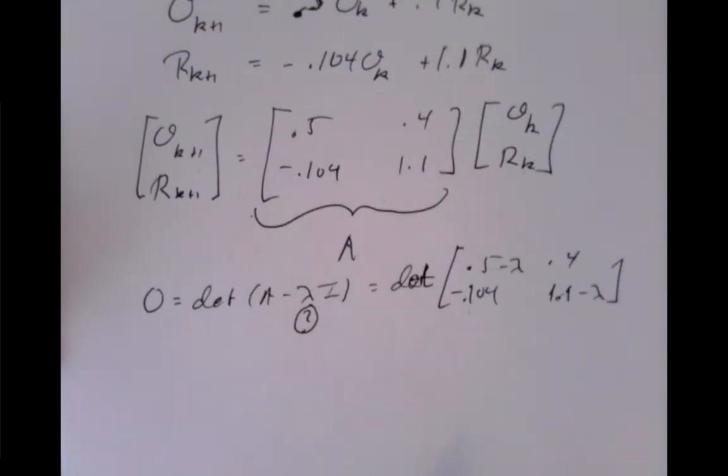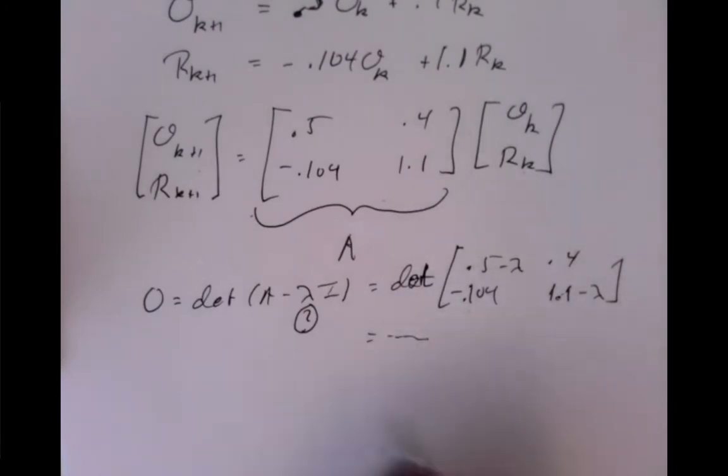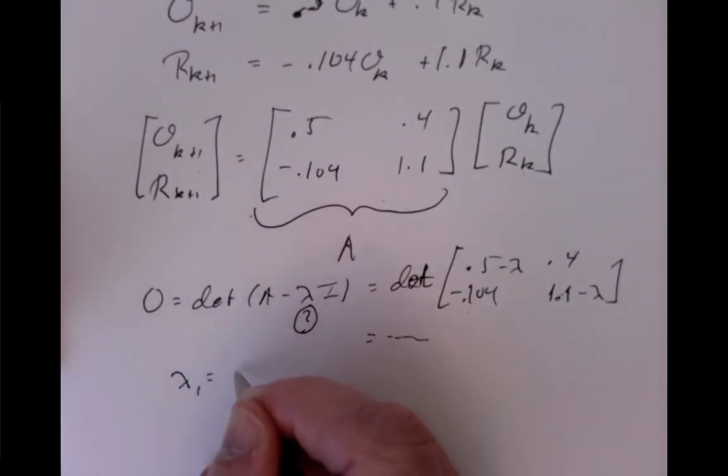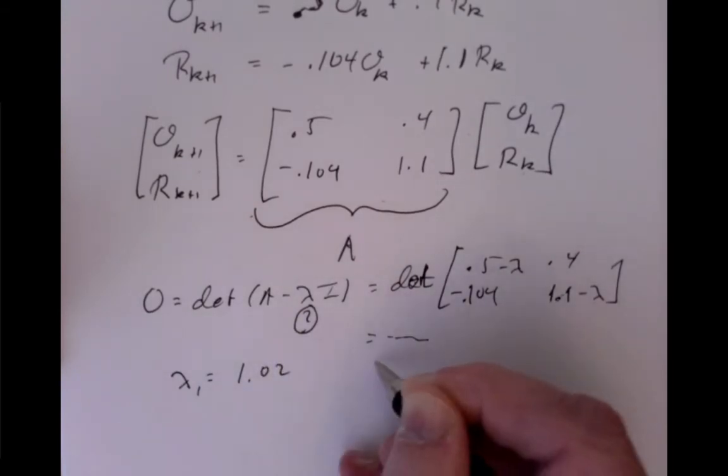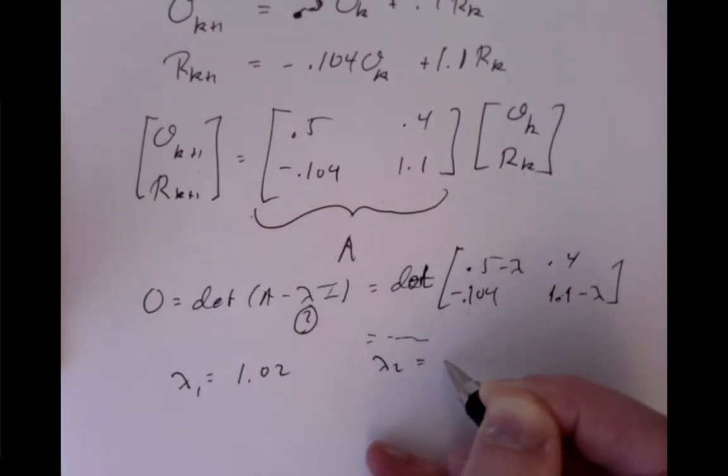And you'd then find, so equals dot, dot, dot, you'd find that in fact the eigenvalues can be calculated out explicitly, and they are, let's say, let's call them lambda, as lambda_1 is 1.02, and another eigenvalue, lambda_2, lambda_2 is 0.58.